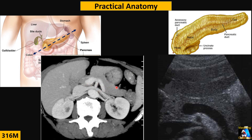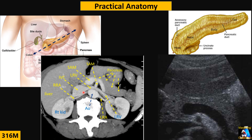There are many structures around the pancreas that we need to know in order to differentiate between normal and abnormal findings. Knowing those relationships is very important and critical for diagnosis of pancreatic pathology. Now let's go into more detail and a practical approach to the anatomy of the pancreas.